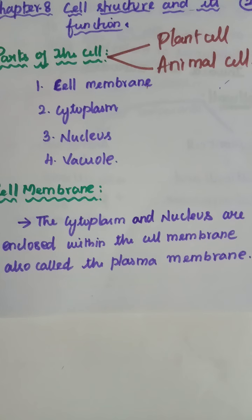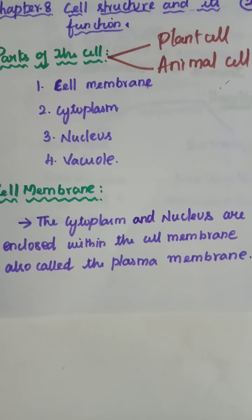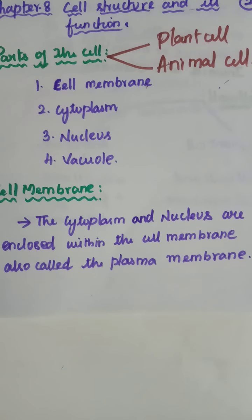Plant cells need protection against variation in temperature, high wind speed, and atmospheric moisture. They are exposed to these variations because they cannot move. Plant organisms need this cell wall. The cells can be observed in the leaf peel of Tradescantia, Elodea, and Draco.